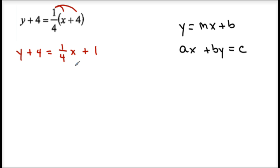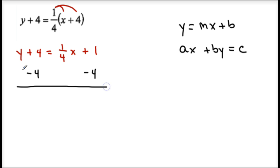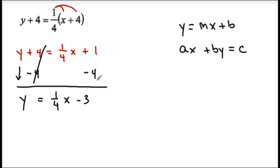For slope intercept form, I need to solve for y. So subtract 4 from both sides. My 4's simplify, giving me y equals 1 fourth x minus 3, since 1 minus 4 is negative 3. There are only two steps: distribute, then bring over the constant. Now I have slope intercept form — y equals mx plus b.